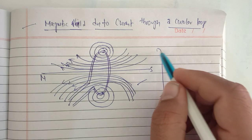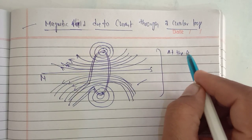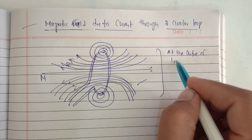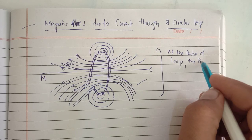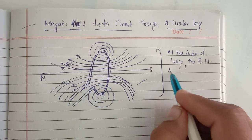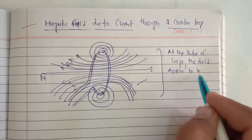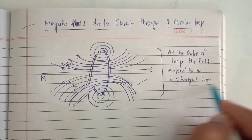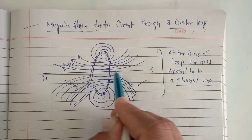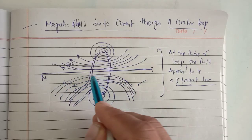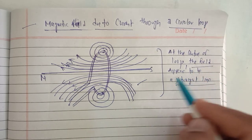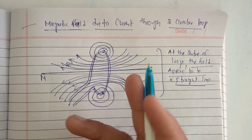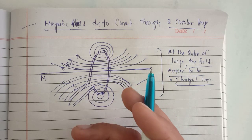Now at the center of the loop, the field appears to be a straight line. This straight line is shown at the center of the loop — the field appears to be a straight line. This describes the magnetic field produced by a current carrying circular wire at a given point.